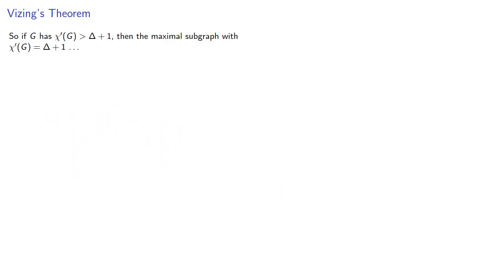So, if our graph has edge chromatic number greater than delta plus 1, then the maximal subgraph with edge chromatic number delta plus 1 isn't maximal. We can always expand it, so it can't exist, which proves Vizing's theorem.